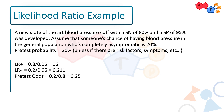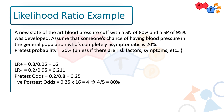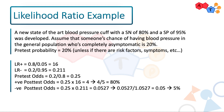We find post-test odds by multiplying the likelihood ratio by our pretest odds. Positive post-test odds is 0.25 times 16, yielding 4 — meaning 4 to 1. We convert this to positive post-test probability by taking 4 over 1 plus 4, which is 4 over 5, yielding a positive post-test probability of 80%.